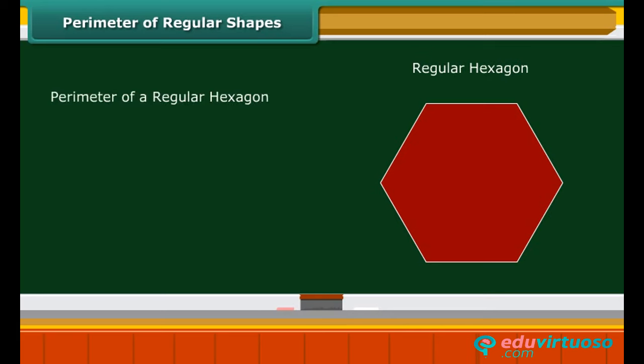The perimeter of a regular hexagon is 6 multiplied by its side. For example, a regular hexagon of side 5 centimeters has a perimeter of 6 × 5 = 30 centimeters.